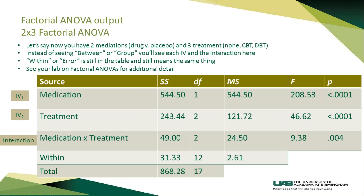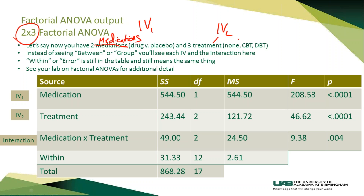Here's a made-up example. Let's say you have a two by three factorial ANOVA. For one of the independent variables you have medication — drug versus placebo, very similar to the preceding example. But you have three treatment groups: none, CBT, and DBT, which stands for dialectic behavior therapy. So we have a two by three factorial ANOVA, with IV1 being medication and IV2 being treatment, and here are the levels.